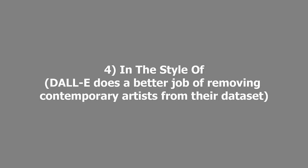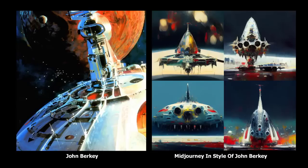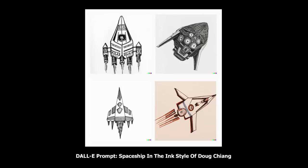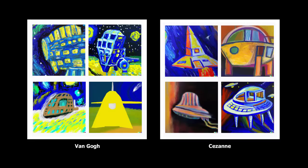While it's impossible to know exactly which artists are in each data set, you can make inferences through testing. When I asked MidJourney for a painting by John Berkey, it definitely captured elements of his aesthetic. But the same prompt in DALL-E returned something that is definitely not John Berkey's style. I ran other tests — spaceships in the style of Star Wars, an X-wing in the style of John Harris — and none returned anything resembling the artist's style. However, if I used older artists like Van Gogh or Cézanne, I got expected results. It seems more modern artists were either not included or specifically removed from DALL-E's data set.